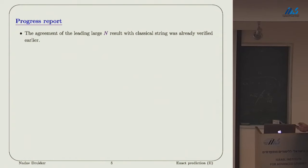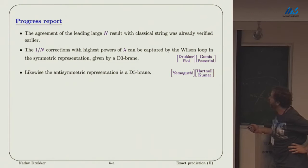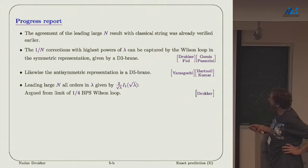Let's see what we learned from that. The large N, large lambda result is reproduced by a classical string, which was checked already before us. All order in 1 over N leading order in lambda can actually be indirectly reproduced by Wilson loop in a high dimensional representation, captured by a D3 brane in AdS5 or by a D5 brane in AdS5 cross S5.